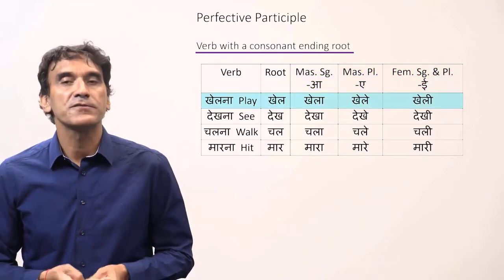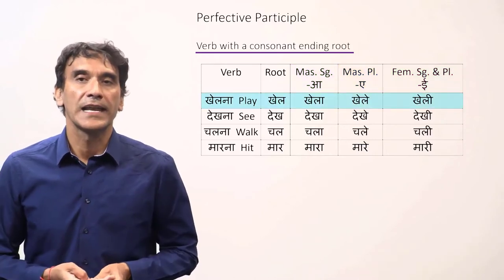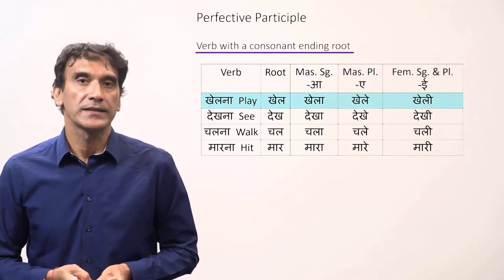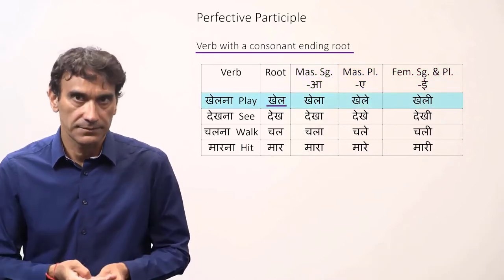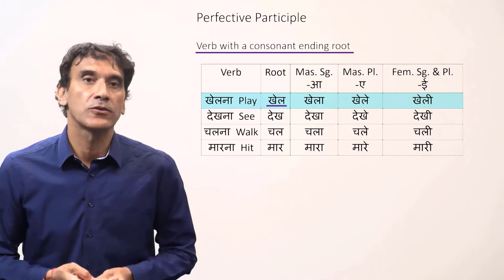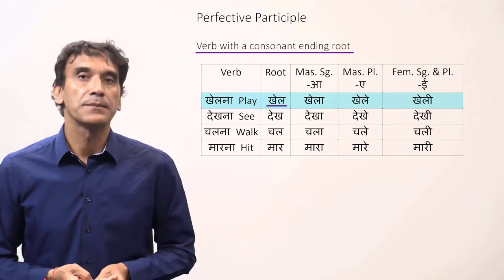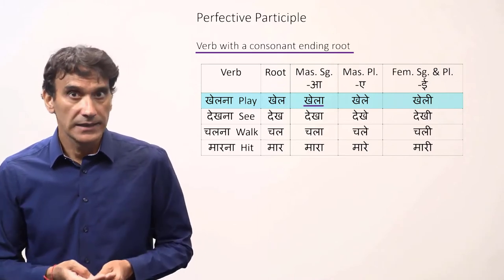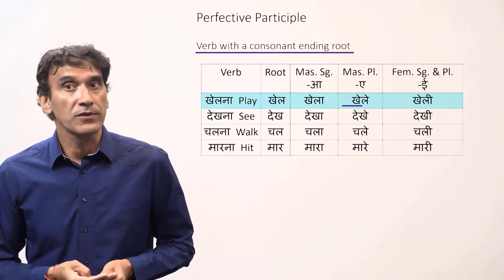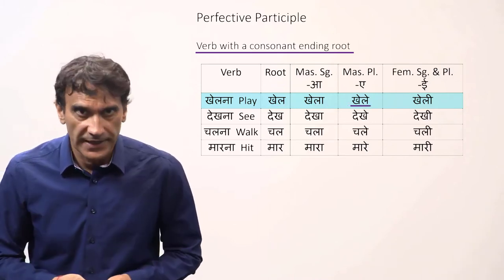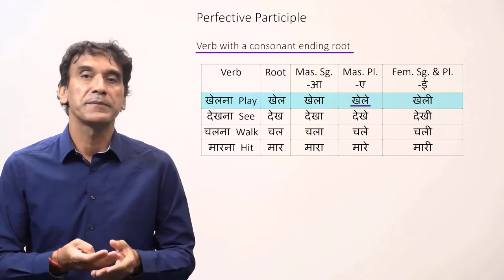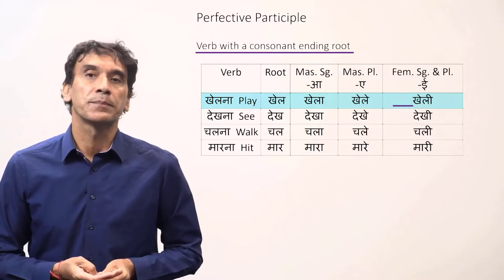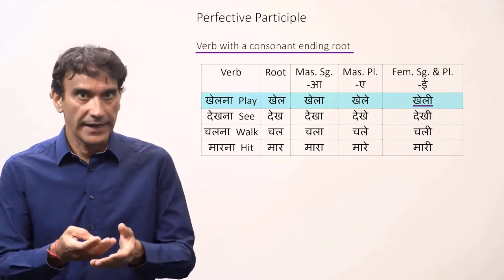The first verb is khelna, to play. The root is khel, a consonant ending root. The masculine singular participle is khela, the masculine plural participle is khele, and the feminine singular and plural participles are kheli.